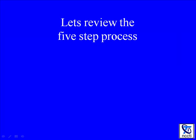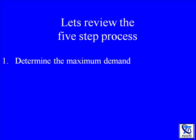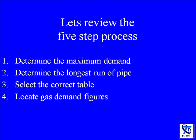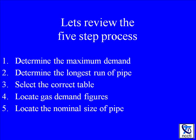Let's do a quick review of the five step process. Number one: determine the maximum demand — just add up all the input BTU per hour. Number two: determine the longest run — use this value to determine all the gas pipe sizes. Number three: select the correct table — probably the most important. Make sure all the numbers match up, such as the type of gas, pressure drop, etc. Number four: locate the gas demand figures in the longest length row. Number five: locate the nominal size of pipe by finding a BTU value greater than or equal to that located on the longest length row.